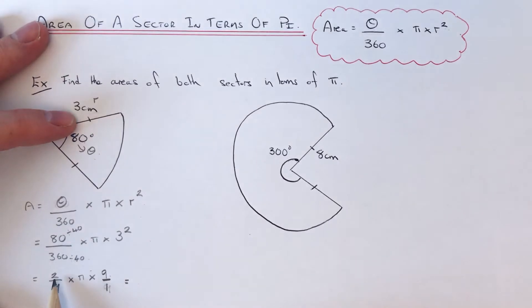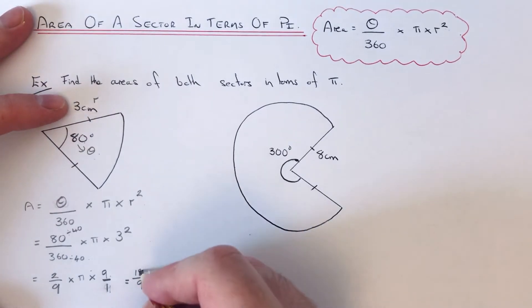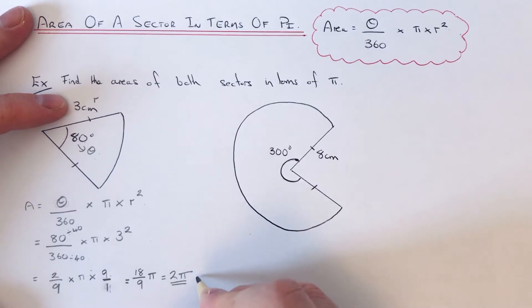And then we can multiply the top numbers of our fraction together to give us 18. And 9 times 1 on the bottom is 9. We put the pi at the end. And then 18 divided by 9 will give 2. So our answer will be 2 pi centimeters squared.